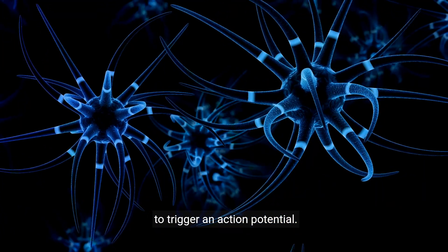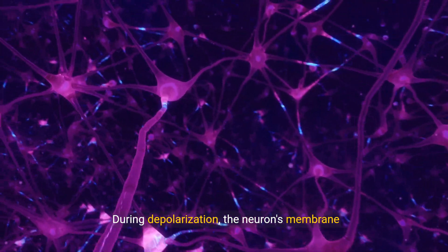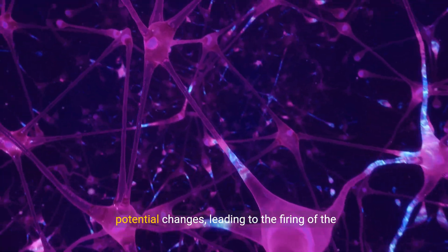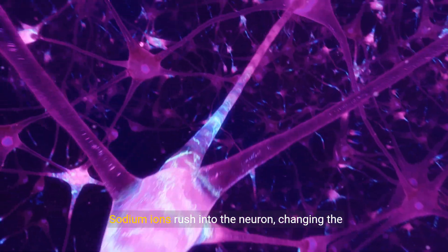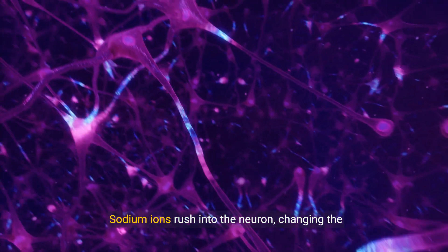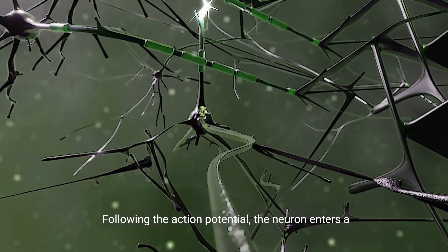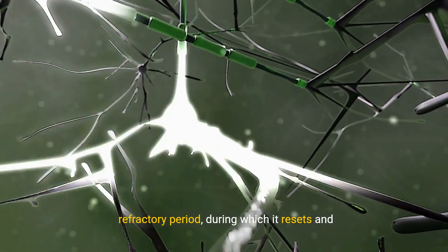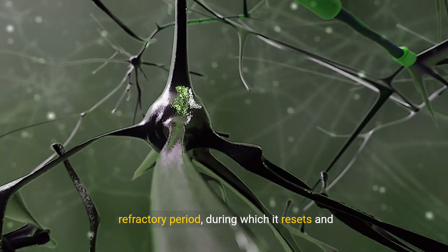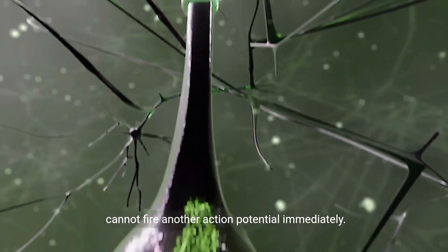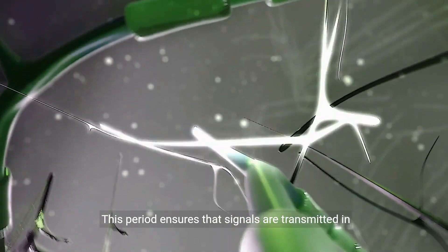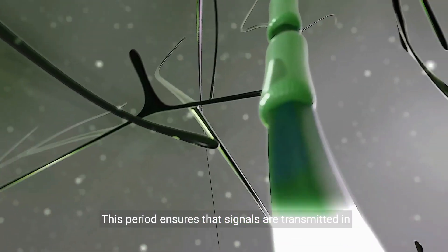The resting potential is the state of the neuron when it's not transmitting a signal, and the threshold is the critical level that must be reached to trigger an action potential. During depolarization, the neuron's membrane potential changes, leading to the firing of the action potential. Sodium ions rush into the neuron, changing the electrical charge. Following the action potential, the neuron enters a refractory period during which it resets and cannot fire another action potential immediately. This period ensures that signals are transmitted in one direction.